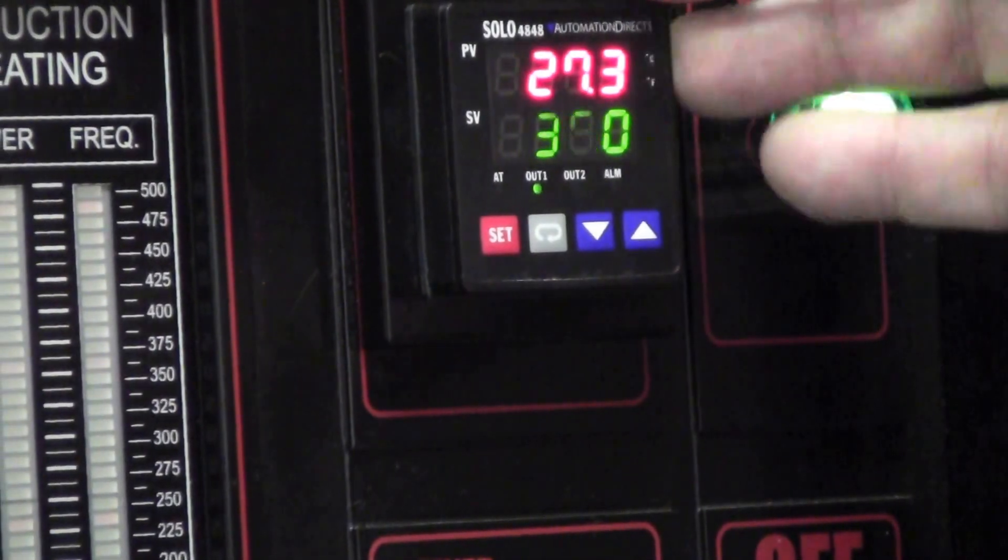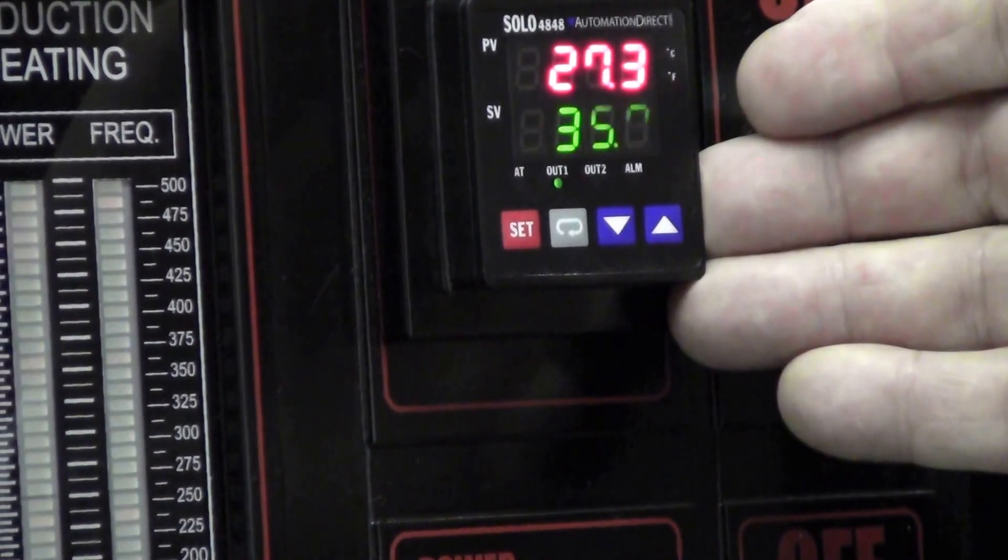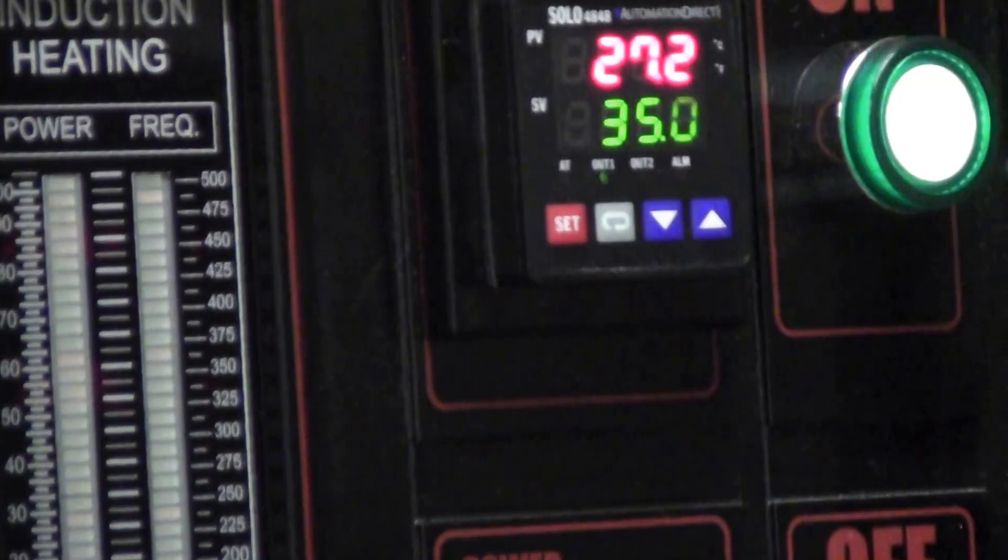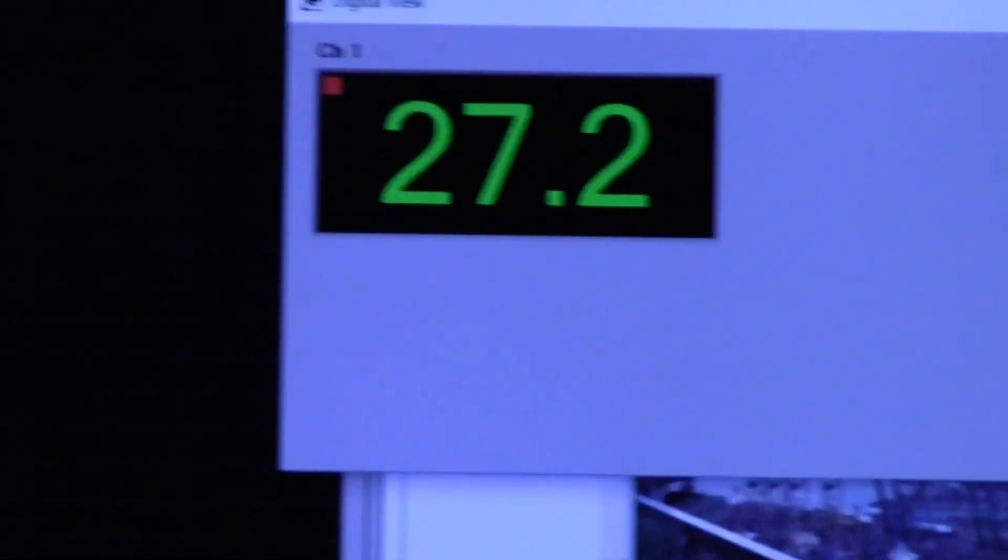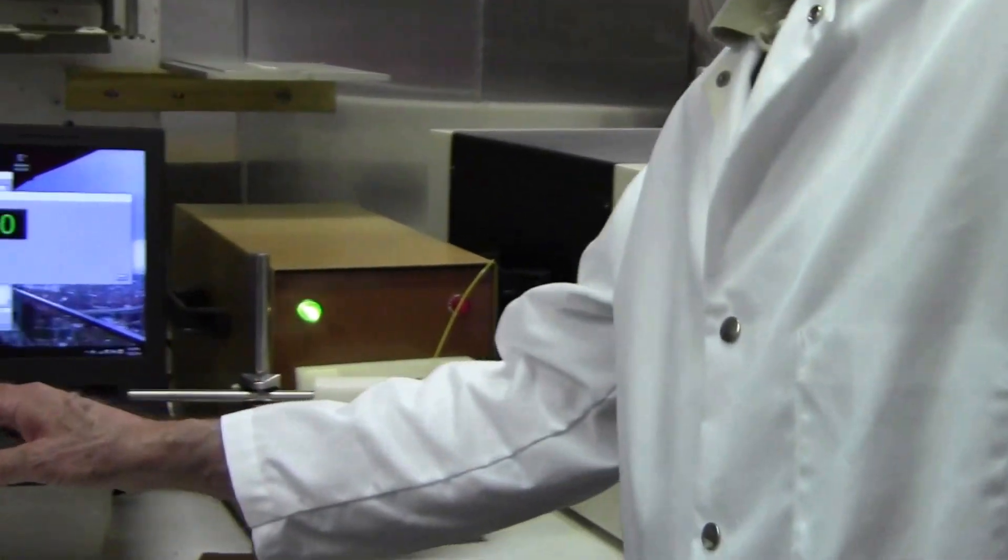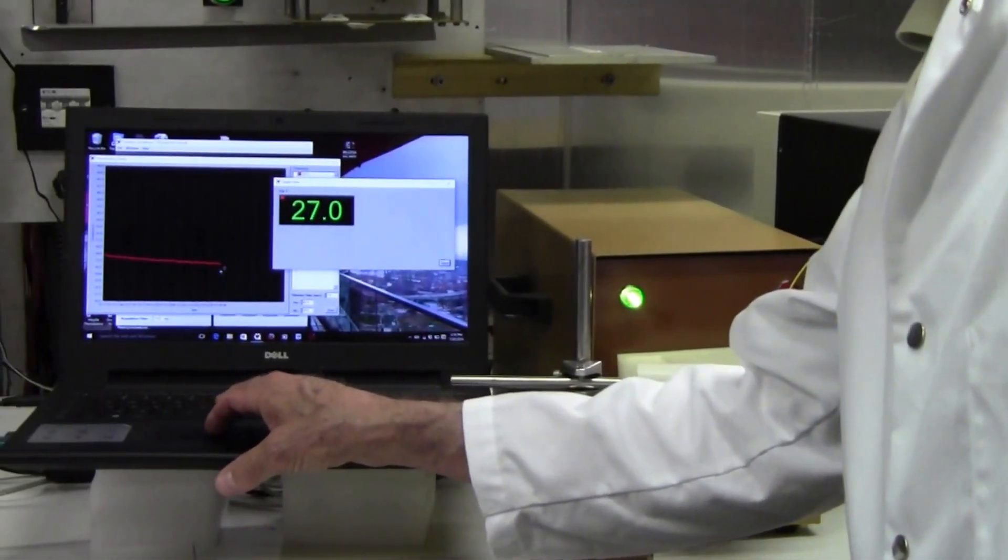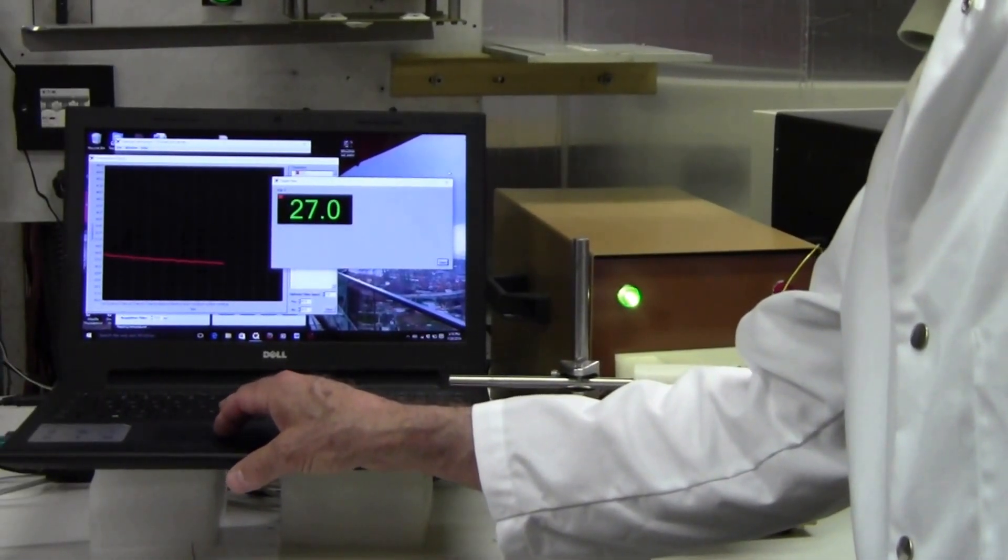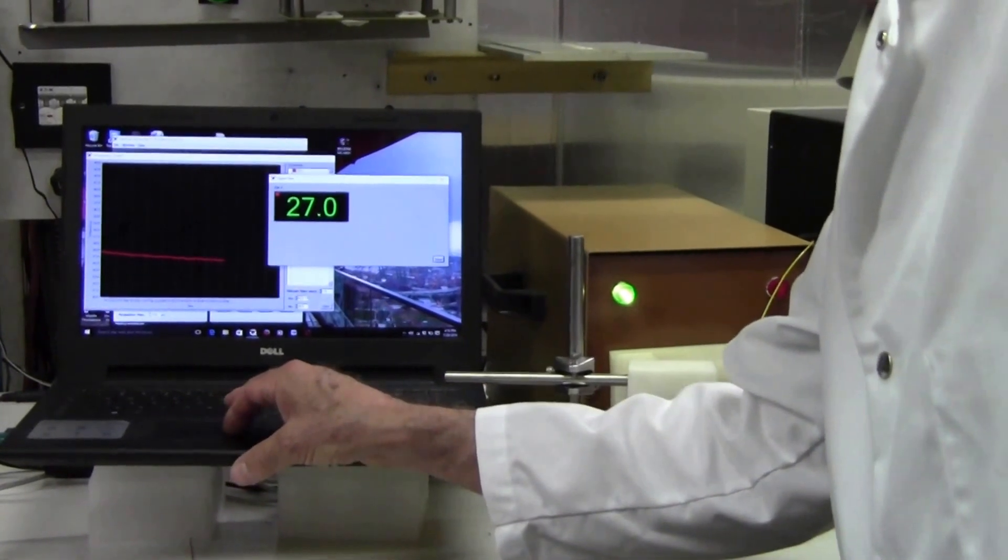Okay, so right now we are at 27.3, and that's the same value shown on the laptop computer. So we'll perform the same heating trial, but you'll see that the temperature controller will prevent it from going above 35 degrees Celsius.